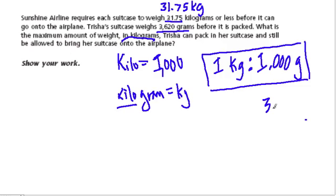So we have 3,620 grams. That's how much is in her suitcase. And we know that every 1,000 grams has one kilogram, so to figure out the number of kilograms here I'm going to say, well, what do you multiply 1,000 by to get 3,620? And the answer is 3.62. And if we don't know that we could just take 3,620 and divide it by 1,000.